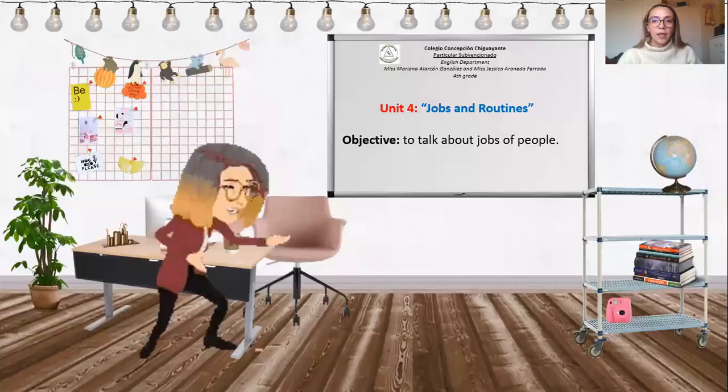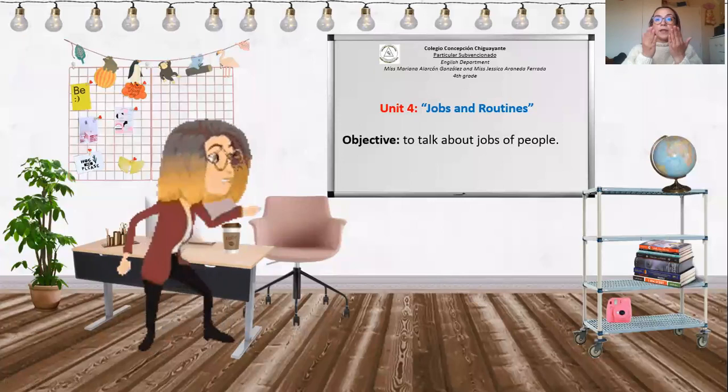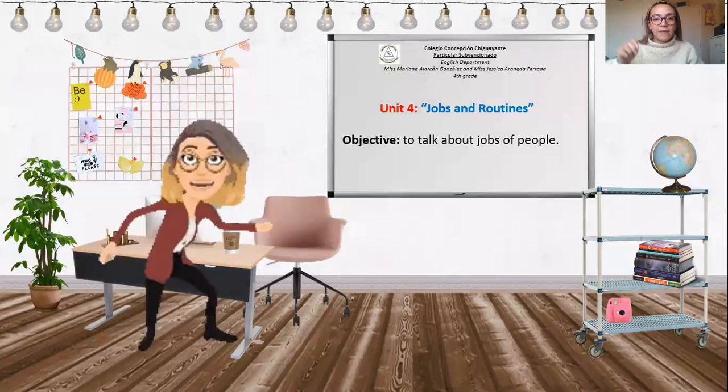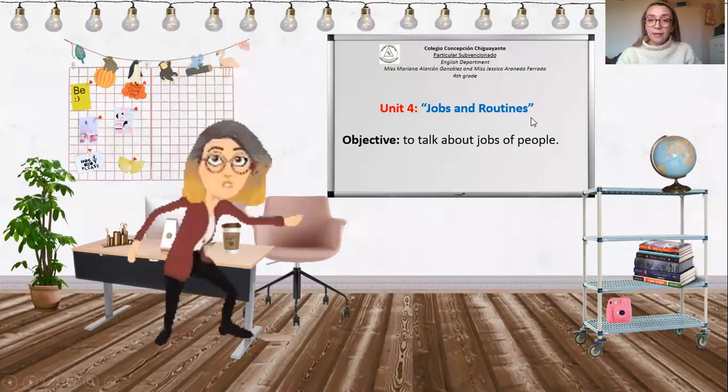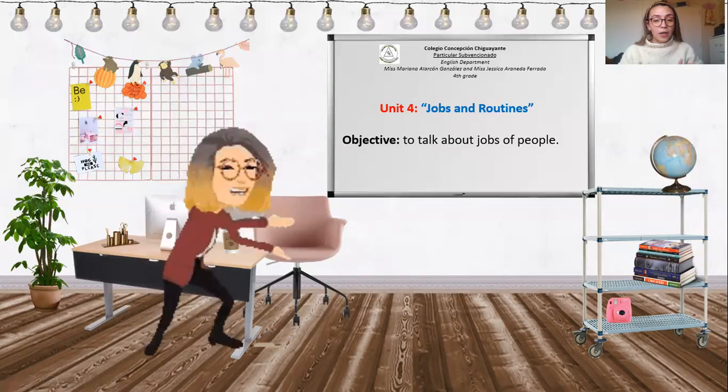Please pay attention. The number and title of this unit is Jobs and Routines, and today the objective is to talk about jobs of people. I need you to open your English copybook — necesito que abras tu cuaderno de inglés — and write down: Unit 4, Jobs and Routines. The title and the objective: to talk about jobs of people — hablar sobre los trabajos de otras personas. Take your time, pause this video, and when you're ready, let's continue.